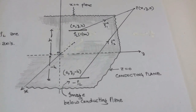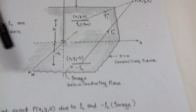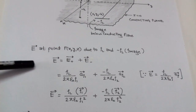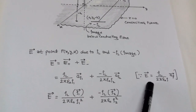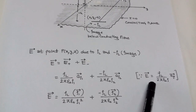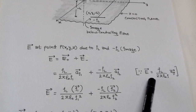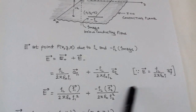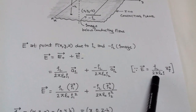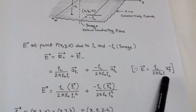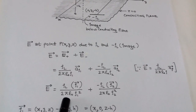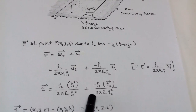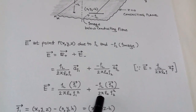The electric field at point P is due to rho_l and minus rho_l, that is the image line charge density. The electric field due to a line charge density is rho_l upon 2*pi*epsilon_0*rho times the unit vector rho. The unit vector rho equals the vector divided by its magnitude, so the formula becomes rho_l times vector rho upon 2*pi*epsilon_0*rho^2. We apply this for line charge density rho_l and minus rho_l.